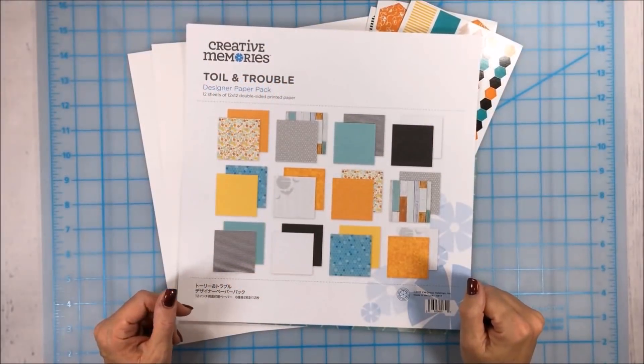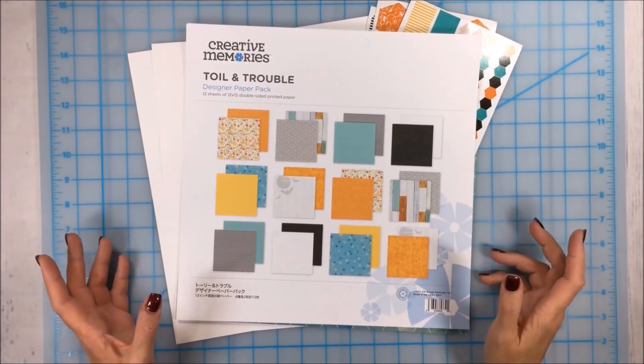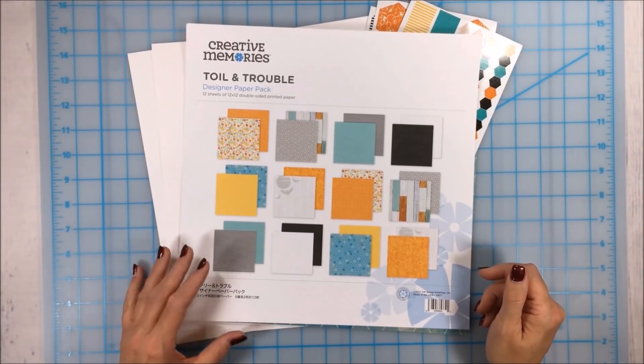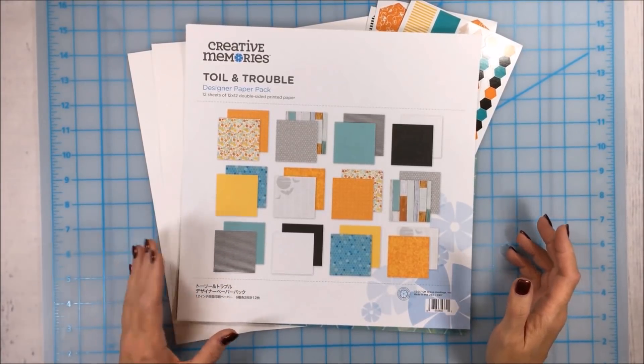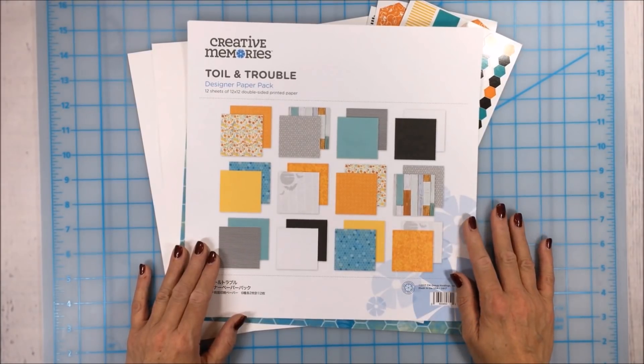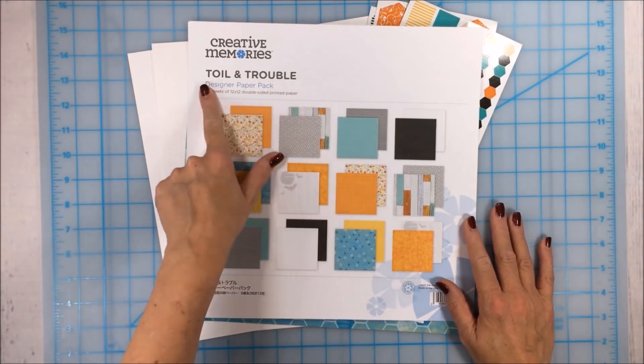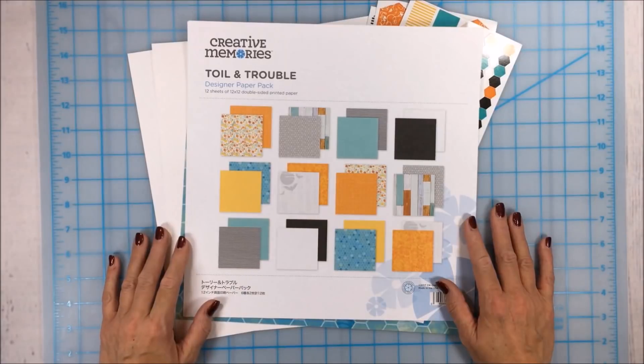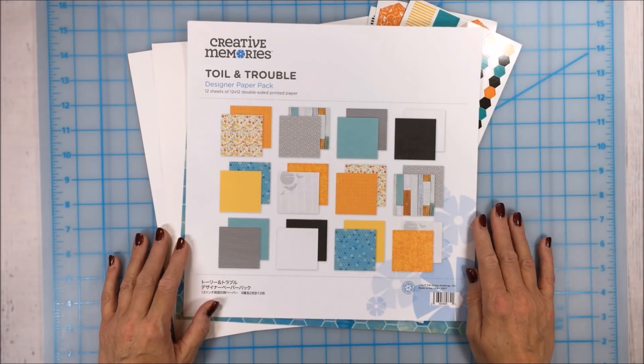Hi everybody, Noreen here. I've got the 123 layout for you for October. Happy Halloween. This is coming at you on October 31st and I'm using what I have left of the super cute Halloween themed Toil and Trouble collection from Creative Memories.